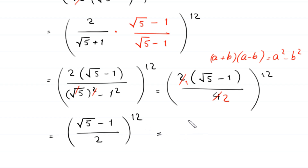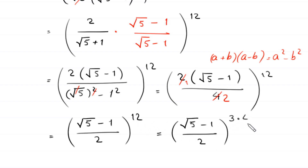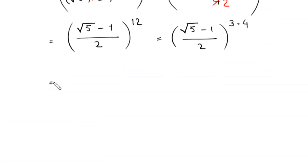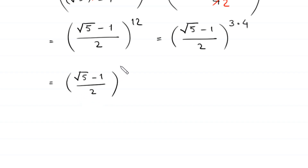Now this expression can be written as square root of 5 minus 1 divided by 2, whole to the power 12, where 12 is the same as 3 times 4. So we can write it as square root of 5 minus 1 over 2, whole cubed, and then whole to the power 4.